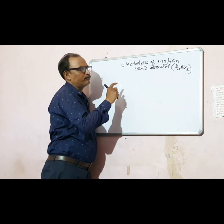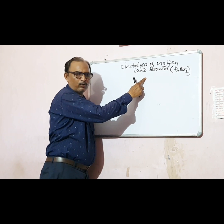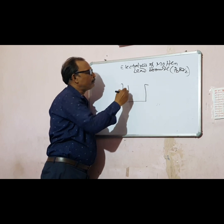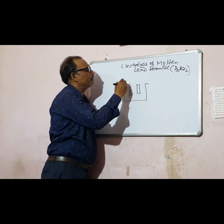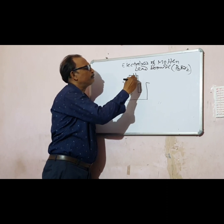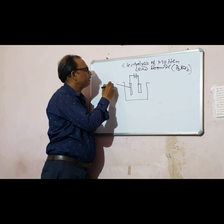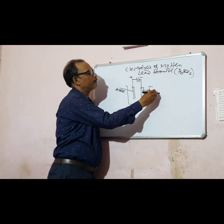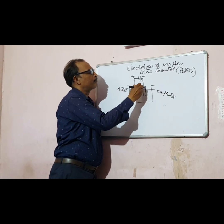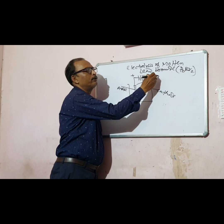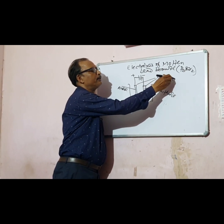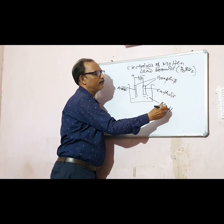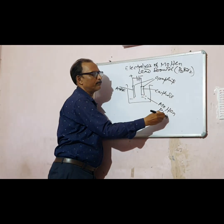This means molten, so no water is there. Whenever you get the question, you just draw a cell like this — a voltameter. This is the positive anode and this is the negative cathode. Both anode and cathode are made of graphite. Graphite is the electrode, and the electrolyte is molten PbBr2.